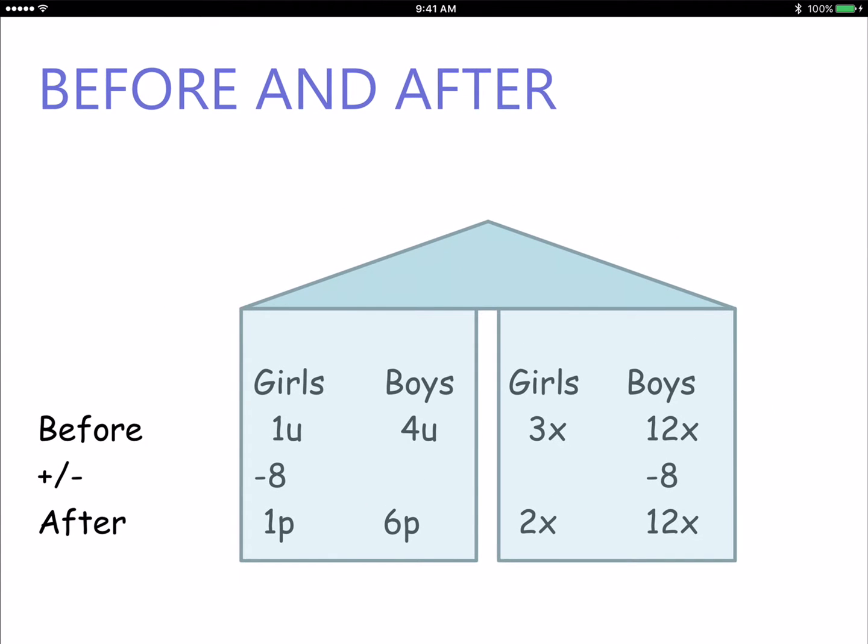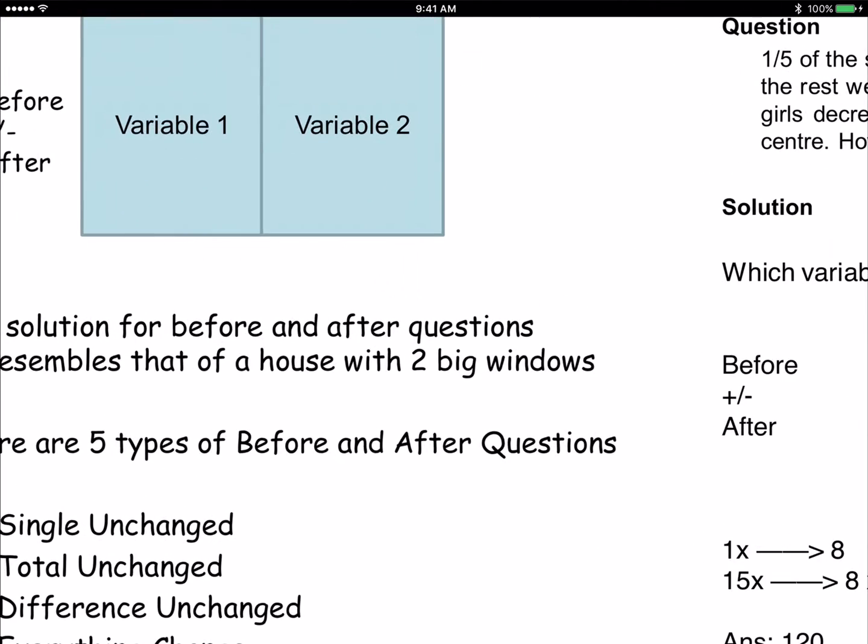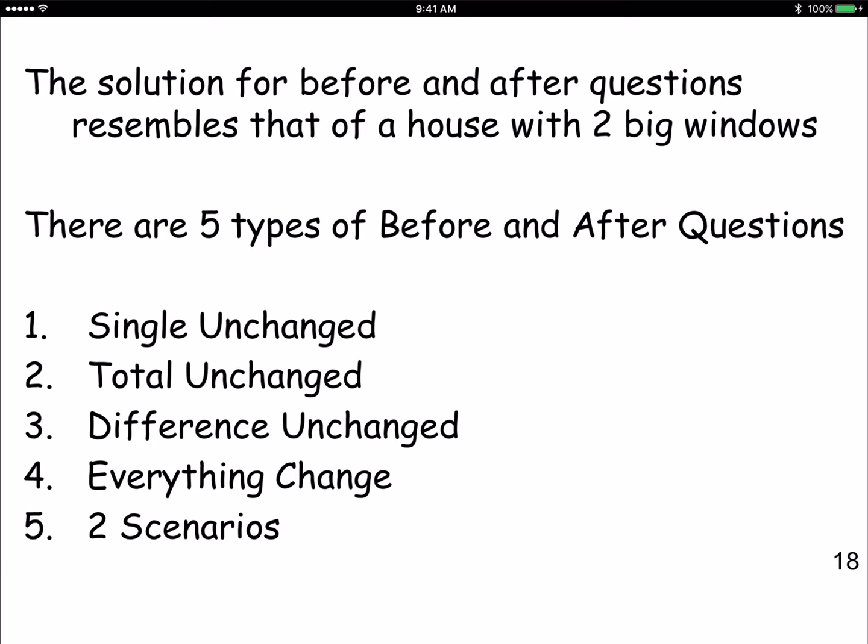Now we go on to the next type. This is my favorite - the before and after type of question. This is also the type of question that I've done in the PSLE seminar. I went through with them, but I only did three times, didn't have time to do more. I only had one morning, so no time to do too many. How many types of before and after are there? Five. There are a total of five different types of before and after. Some schools classify the last one, the two scenarios, as assumption or something else, but I think we can classify it under before and after. So there are five types: I will call it the single unchanged, total unchanged, difference unchanged, everything change, and two scenarios.